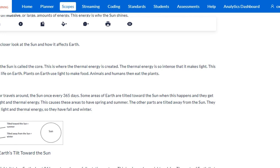Seasons. Earth orbits or travels around the sun once every 365 days. Some areas of Earth are tilted towards the sun when this happens and they get more direct light and thermal energy. This causes these areas to have spring and summer. The other parts are tilted away from the sun. They get less direct light and thermal energy, so they have fall and winter.